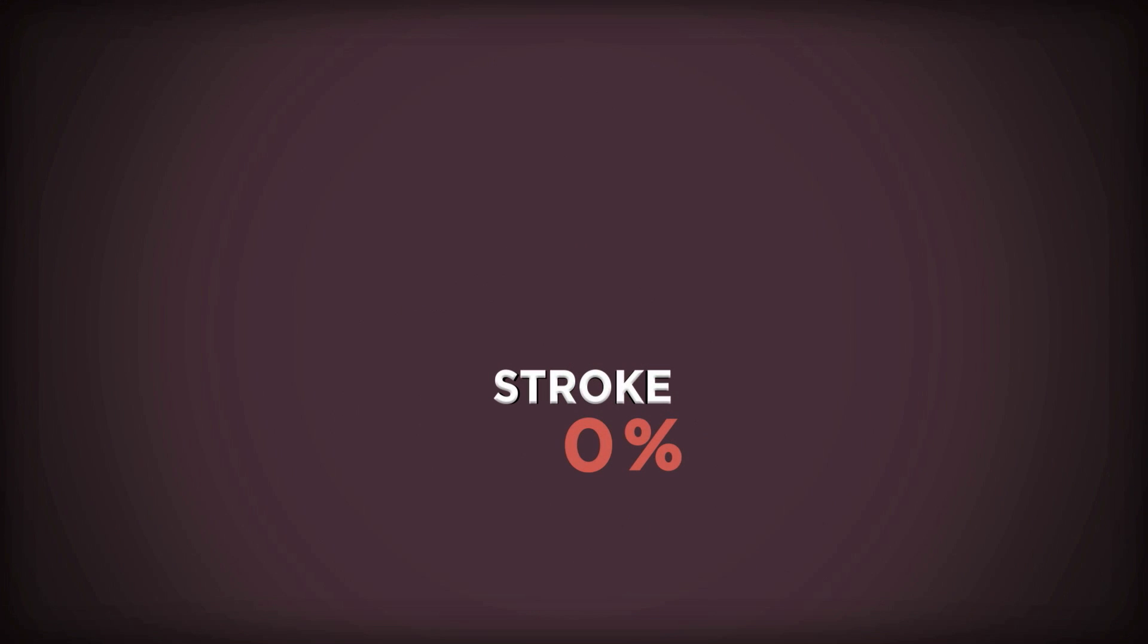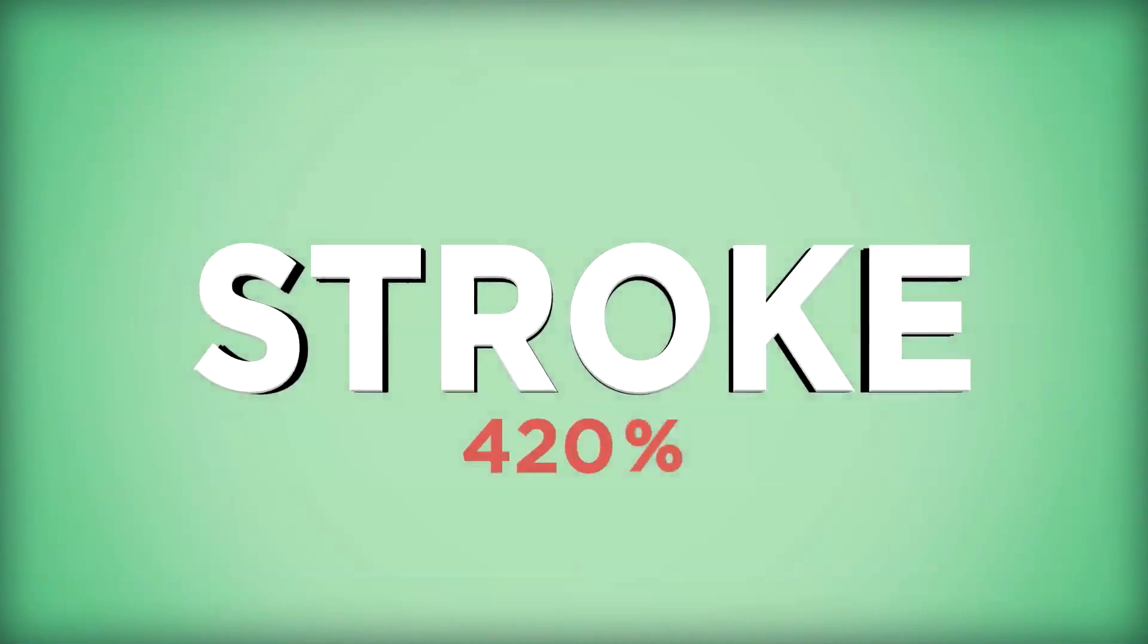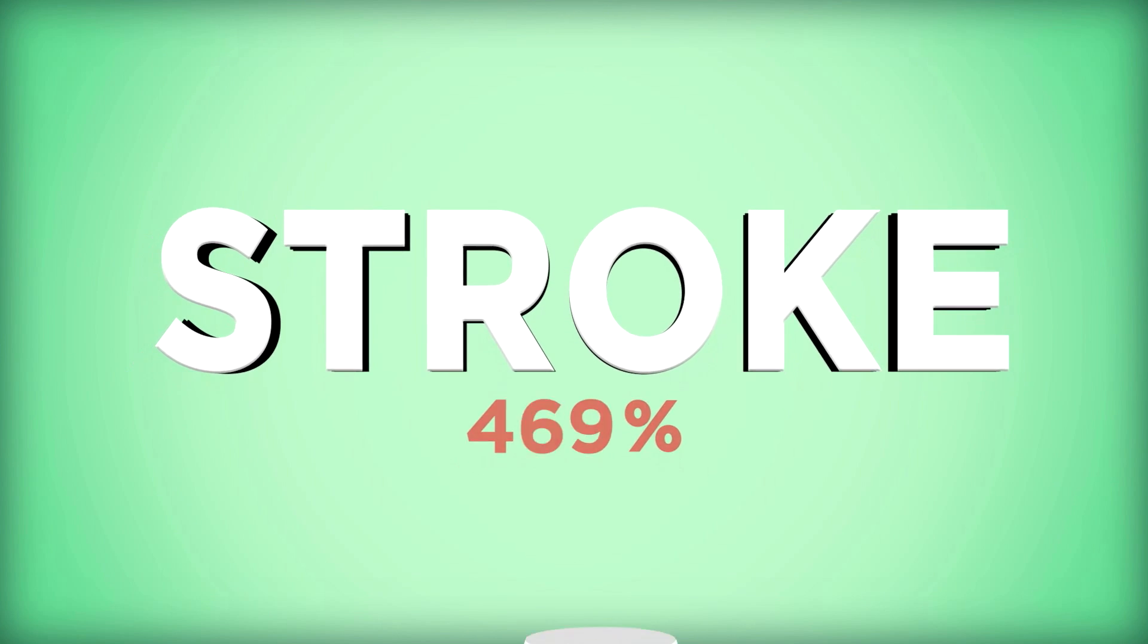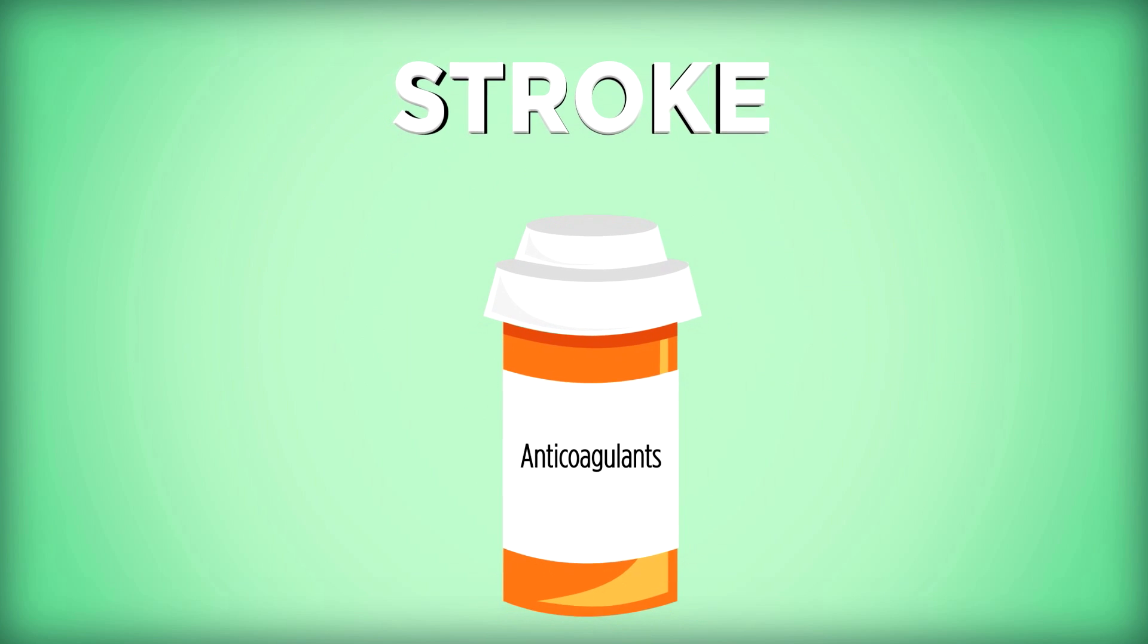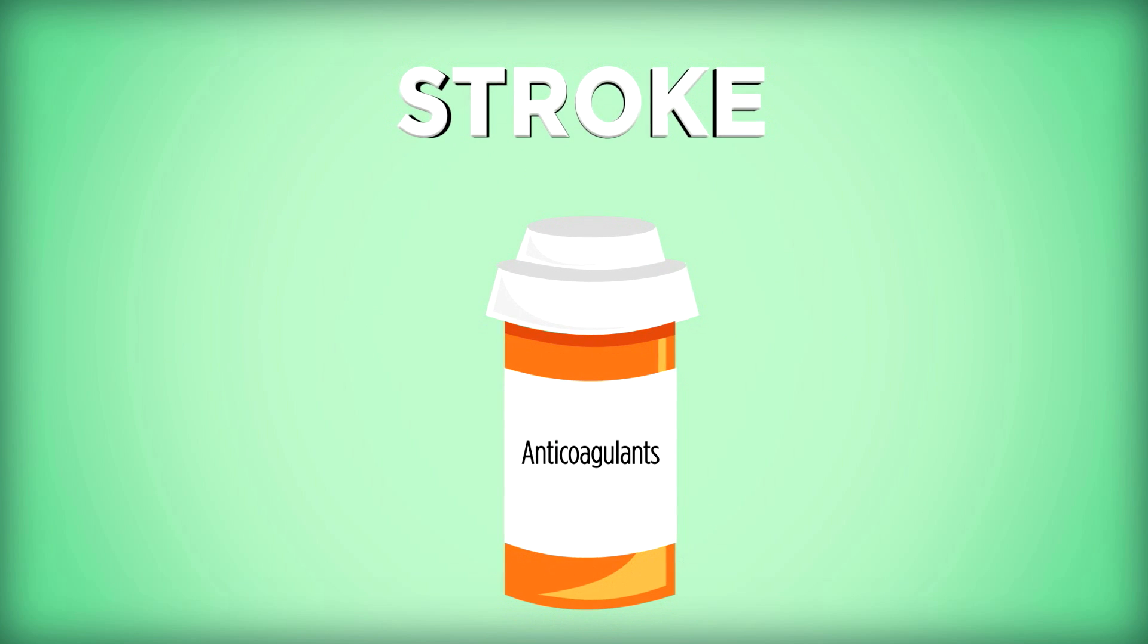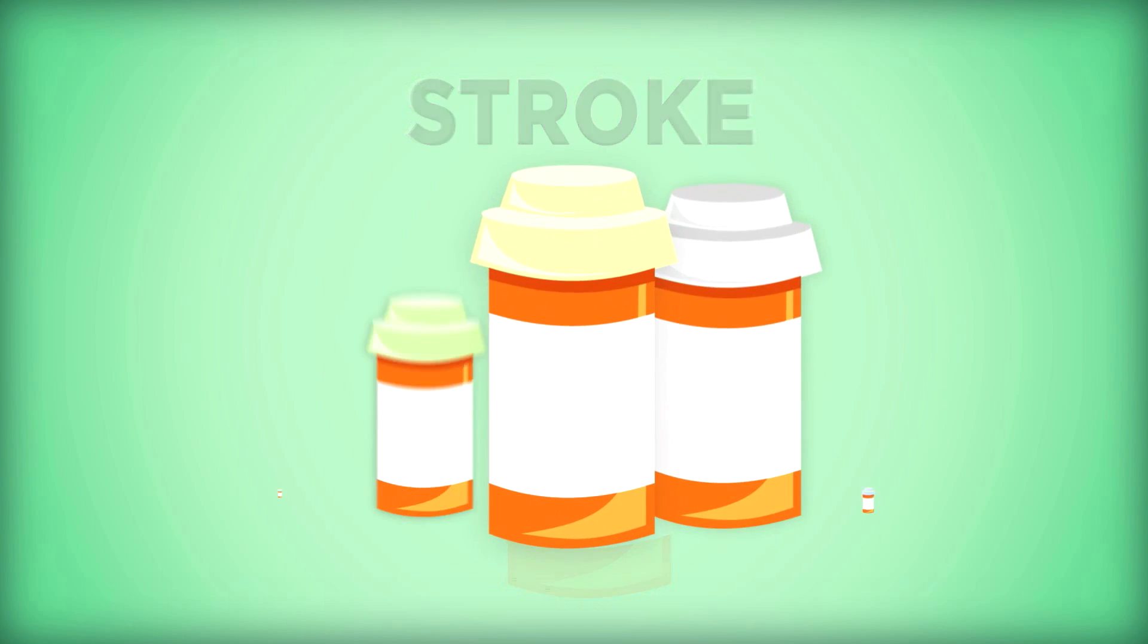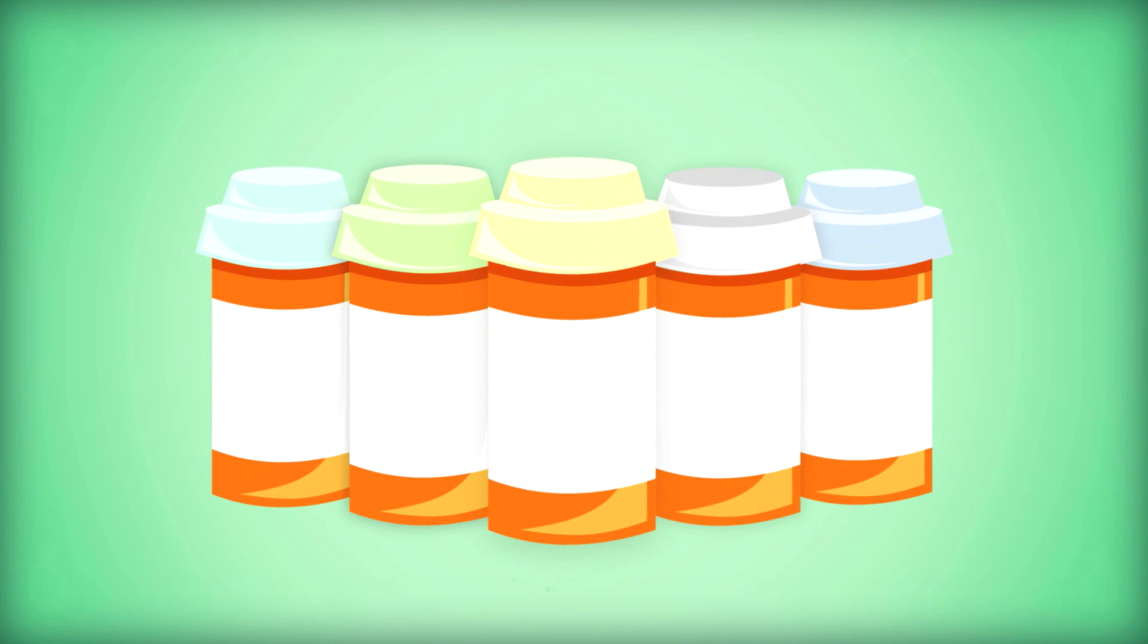The risk of stroke in a person with AFib is 500% higher than in someone without the disease, so treatment to reduce stroke risk is essential. Anticoagulants, also called blood thinners, interfere with the body's clotting mechanisms and reduce the risk of stroke.